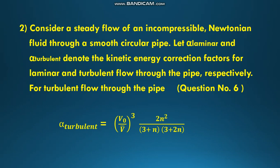Next question: consider a steady flow of an incompressible Newtonian fluid through a smooth circular pipe. α_laminar and α_turbulent denote the kinetic energy correction factors for laminar and turbulent flow through the pipe respectively. For turbulent flow through the pipe, α_turbulent = (V₀/V̄)³ × 2n²/[(3+n)(3+2n)].